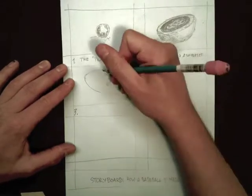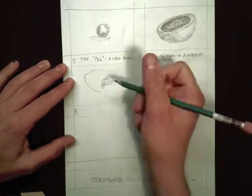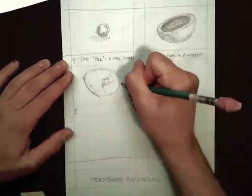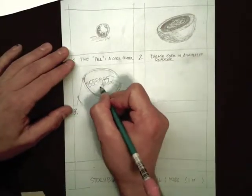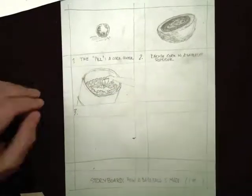So the next step is going to be to show the pills being covered with adhesive. So I'm going to draw an arm with a cup pouring some glue into a big round tumbler that the pills are turned in to coat them with glue.